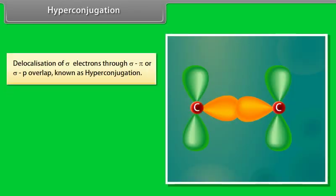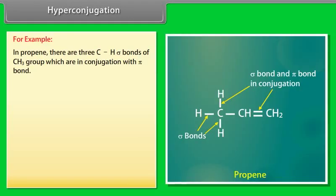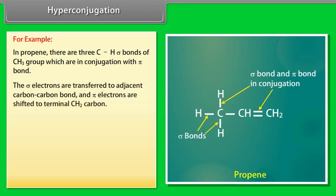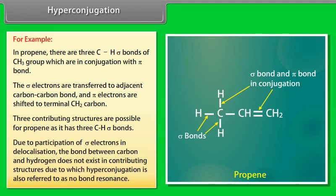Hyperconjugation: delocalization of sigma electrons through sigma–pi or sigma–p orbital overlap is known as hyperconjugation. The sigma bond in conjugation with a pi bond or with a p orbital participates in delocalization and stabilizes the system. In propene, the three C–H sigma bonds of the CH3 group are in conjugation with the pi bond. The sigma electrons are transferred to the adjacent C–C bond and the pi electrons shift to the terminal CH2 carbon, giving three contributing structures. Because the C–H bond does not exist in contributing structures, hyperconjugation is also referred to as no-bond resonance.